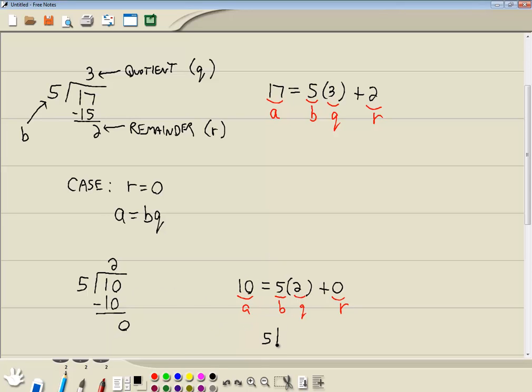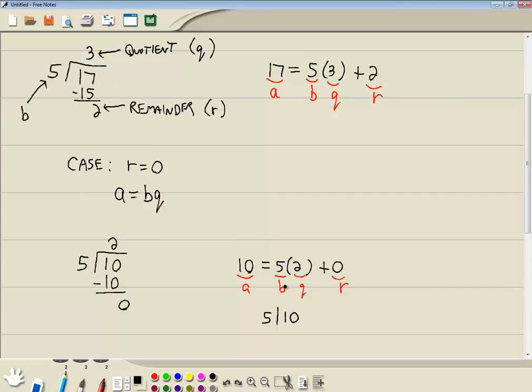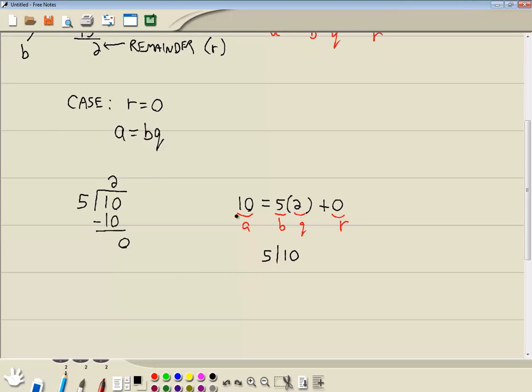5, and then a vertical bar, and then 10. That says that 5 divides 10. Now, of course, our example up here, A is equal to BQ. If I think of how the A's and B's all connect, our 10 was A, and our 5 was B. So we would say B divides A.